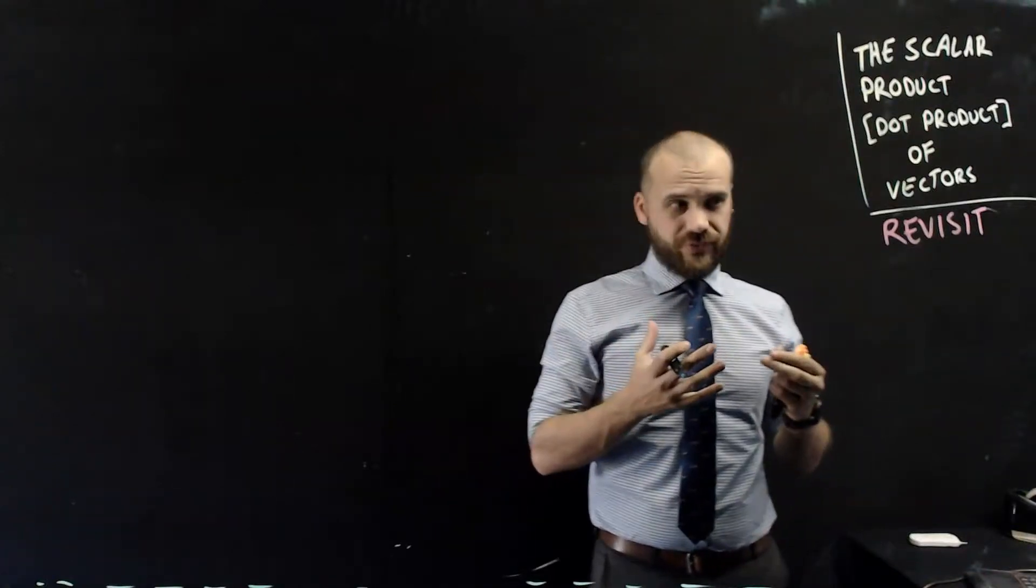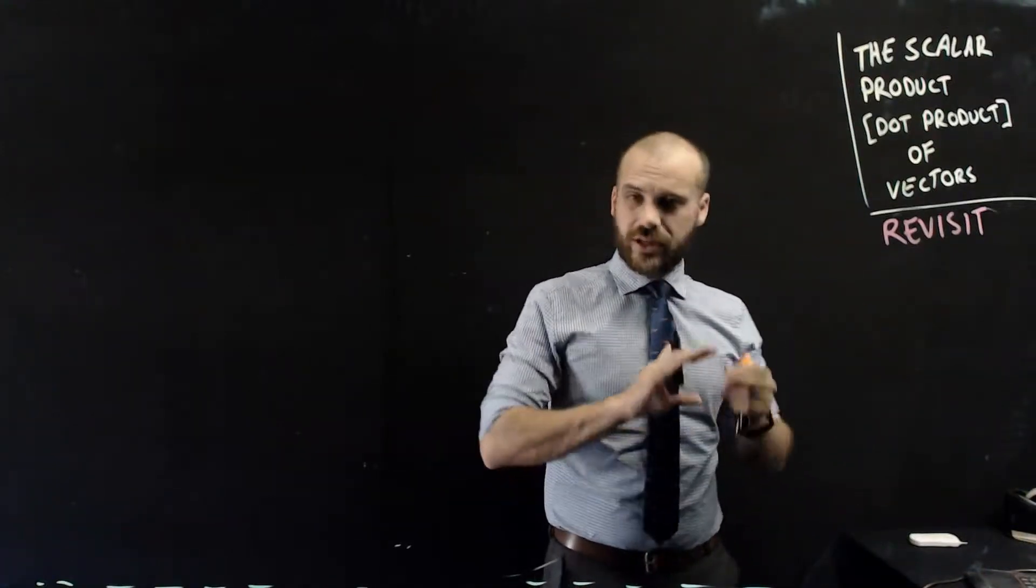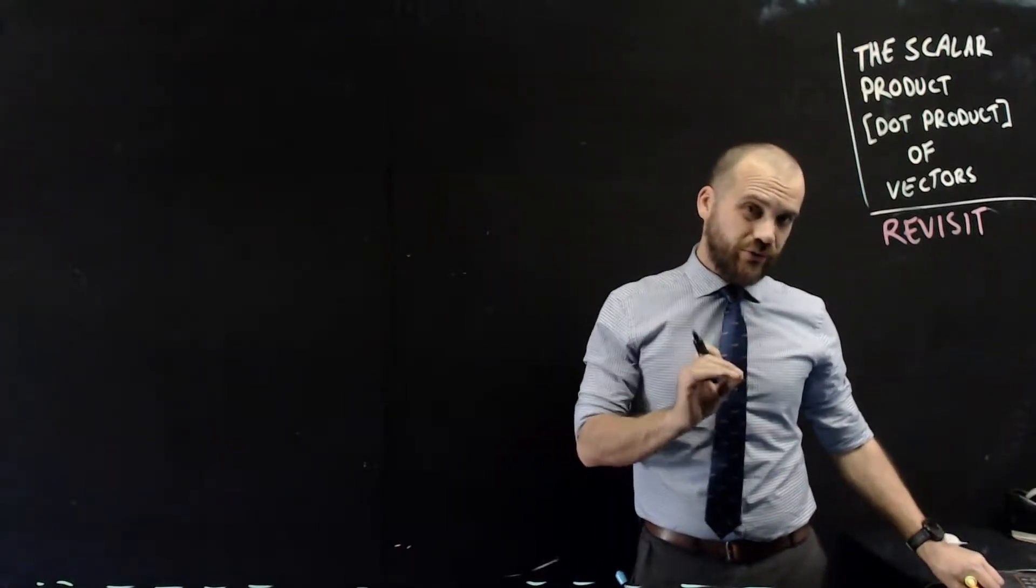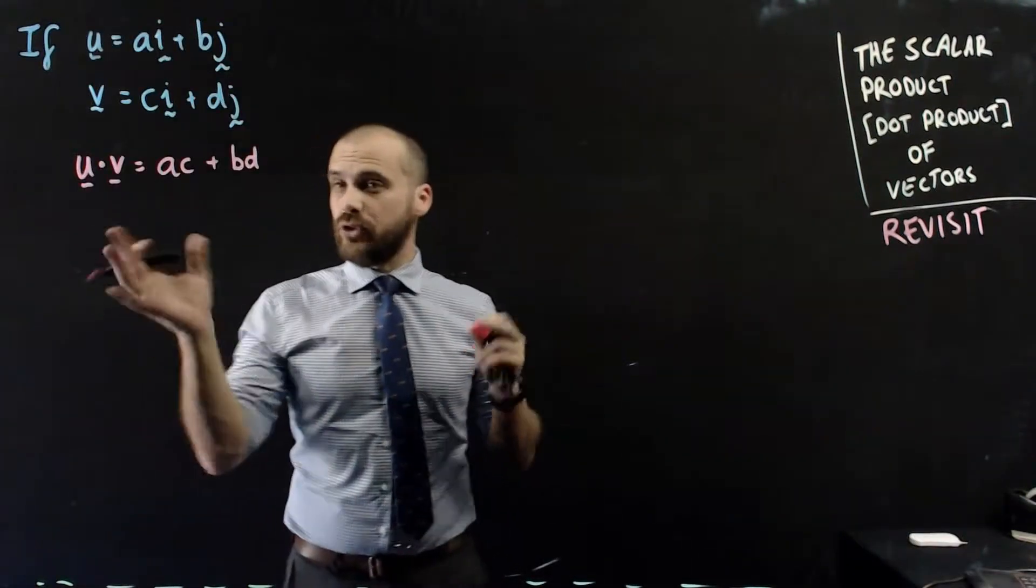This is the scalar product or dot product of vectors. This video is kind of a revisit. I've done this before. Let's take a look at two vectors in component form first.